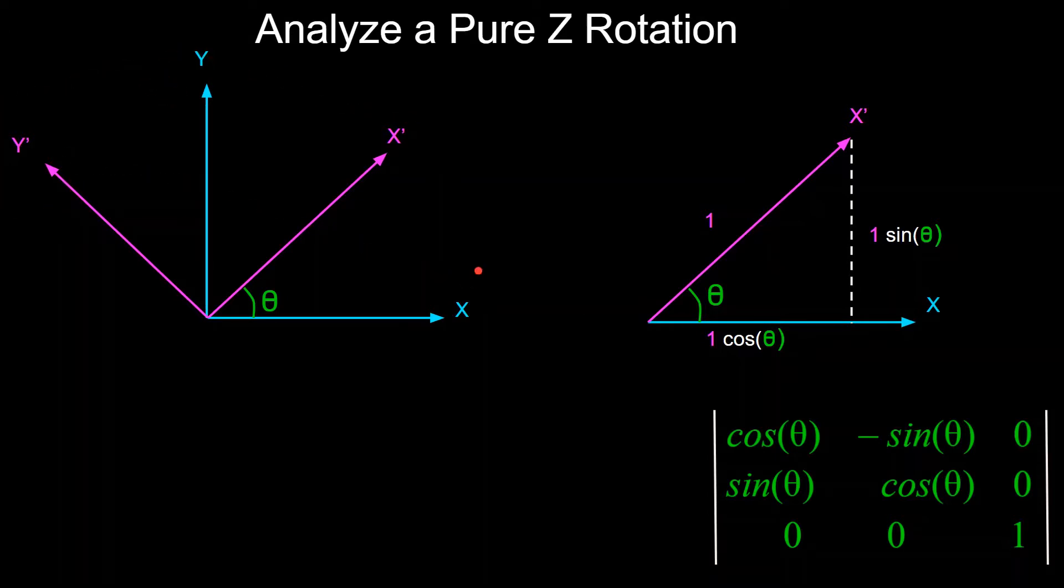So from trigonometry, we know that the height of this rotated vector, given by this white line, is equal to 1 times the sine of theta.